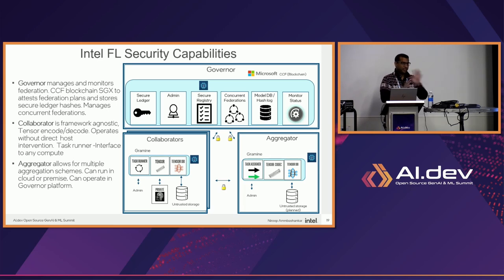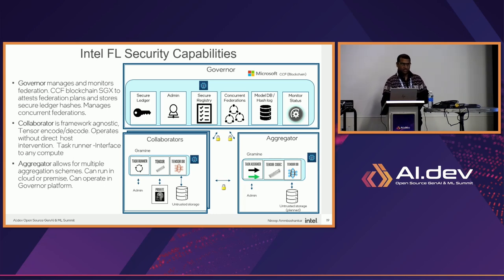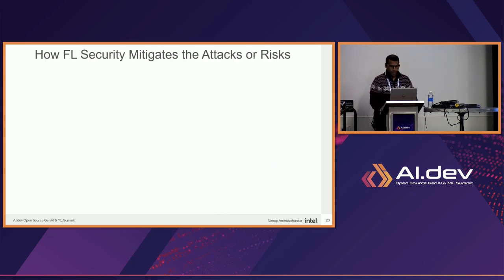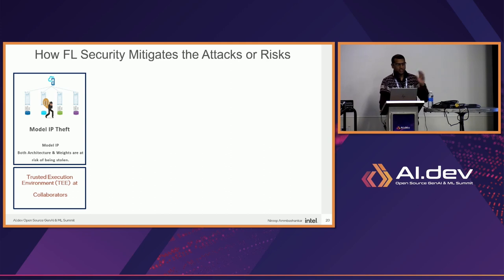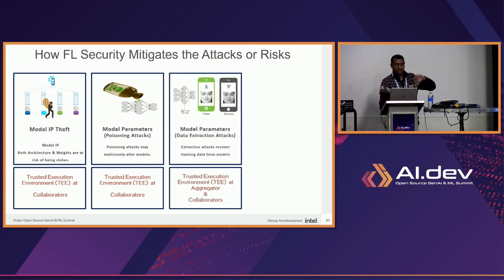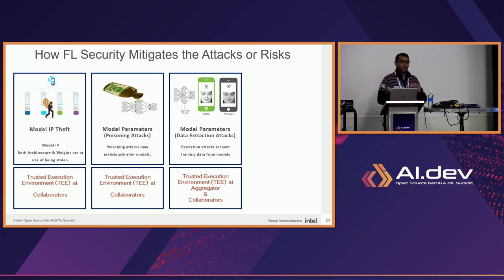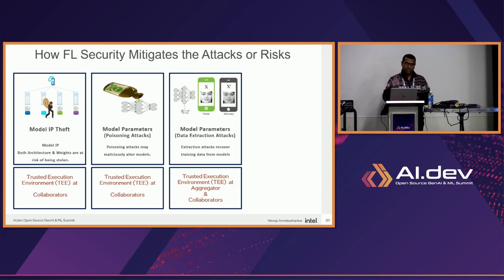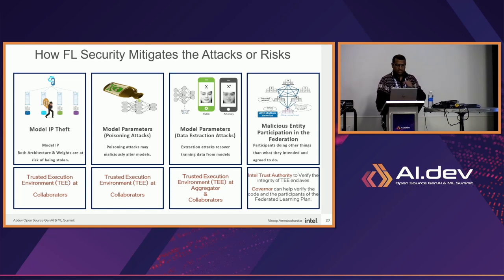What FL Security does is add a governor security entity in addition to collaborators and aggregators. For model IP theft: the TEE in collaborators prevents any model from being accessed. For malicious parameter updates: same protections apply in collaborators. For data extraction attacks: TEEs in both aggregator and collaborator prevent this — though some federations may choose SGX only in collaborators. The level of security depends on how the federation is set up. Intel Trust Authority verifies the TEE enclaves, and the governor verifies the plan.